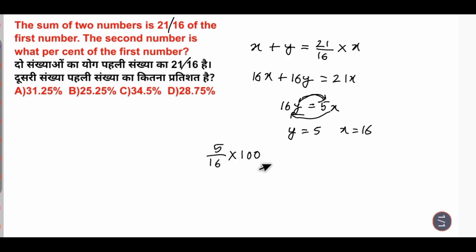So what will happen? 500. If I divide it by 16, then how much will I come? The second number is 31.25 percent.